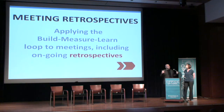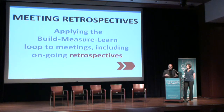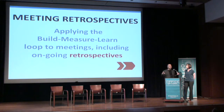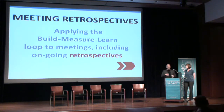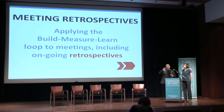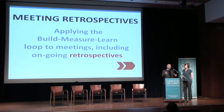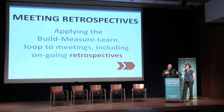We also apply the build-measure-learn methodology to meetings. It's really important, especially as we work remotely, to keep our meetings relevant. On a regular cycle, at the end of each month, we do a retrospective: how did the meetings go this month? What worked, what didn't work, what do we want to try — create some hypotheses — and incorporate those learnings into the next months of meetings. Maybe people could opt out, maybe we want to try a new agenda. It really keeps meetings fresh.